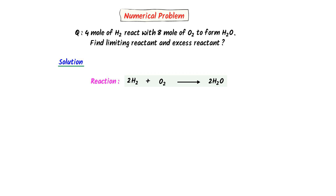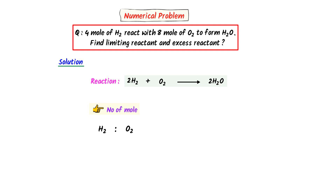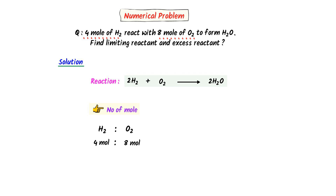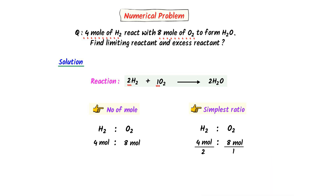According to the trick, in the first step, we find the number of moles. In this question, we are already given the number of moles. The number of moles of hydrogen gas is 4 moles and that of oxygen gas is 8 moles. In the second step, we find the simplest ratio between them. I write the number of moles of hydrogen gas, which is 4 moles, and oxygen gas, which is 8 moles. The stoichiometric coefficient of hydrogen gas is 2, so I divide 4 moles by 2. The stoichiometric coefficient of oxygen gas is 1, so I divide 8 moles by 1. I get a ratio of 2 to 8.